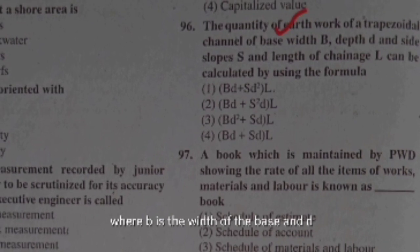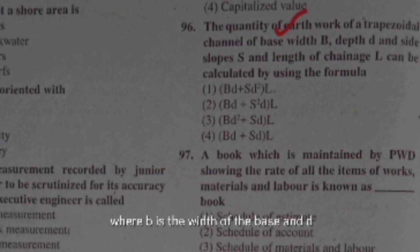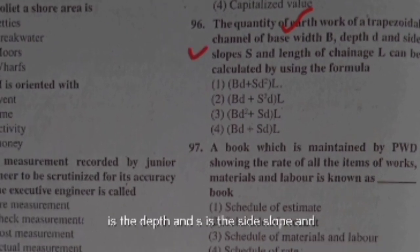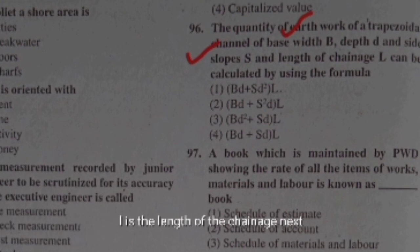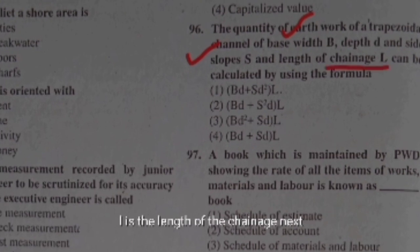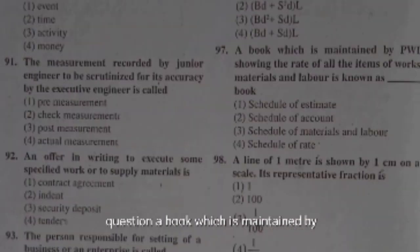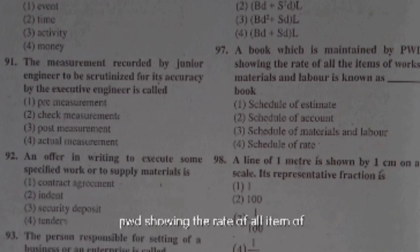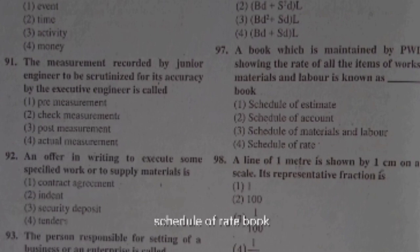The quantity of earthwork for a trapezoidal channel is given by (bd + sd²) × L, where b is the base width, d is the depth, s is the side slope, and L is the length. A book maintained by the PWD showing the rate of all items of works, materials, and labour is known as the schedule of rates book.